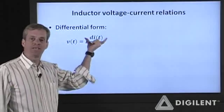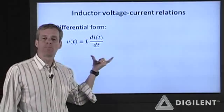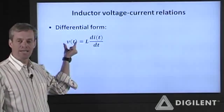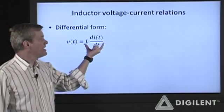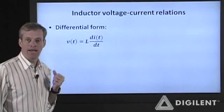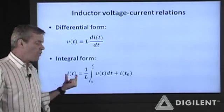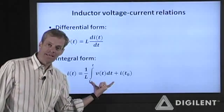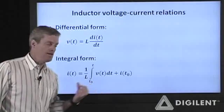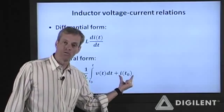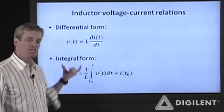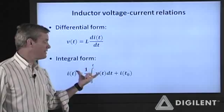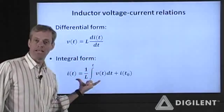The same way we did for capacitors, this expression can also be represented in integral form by integrating both sides of this. Multiply through by dt, integrate this side with respect to time, integrate this side with respect to I of t. If we do that, we find that I(t) is 1/L times the integral with respect to time of V(t) dt plus some initial current through the inductor. Both of these are worthwhile knowing. If you have to memorize one, I typically remember this one and then I can integrate that fairly readily to get this one if I need it.